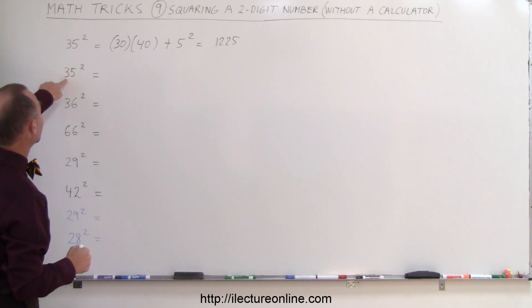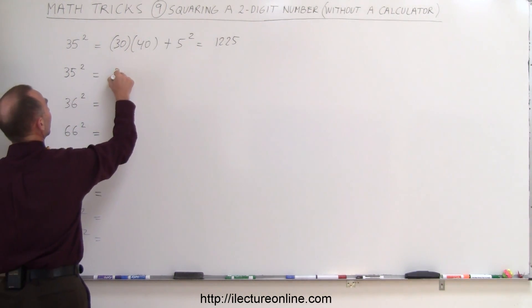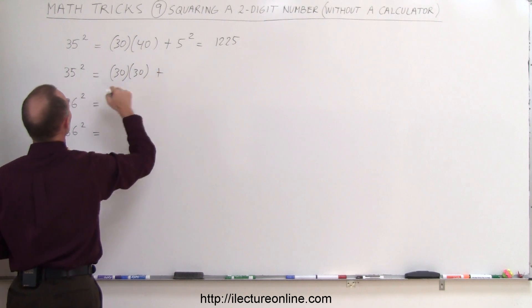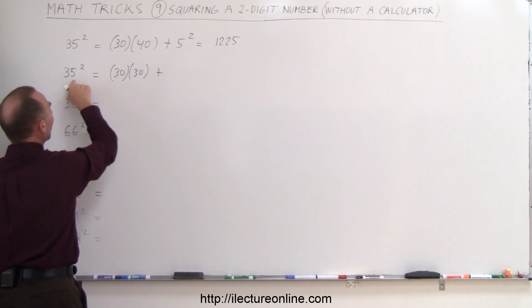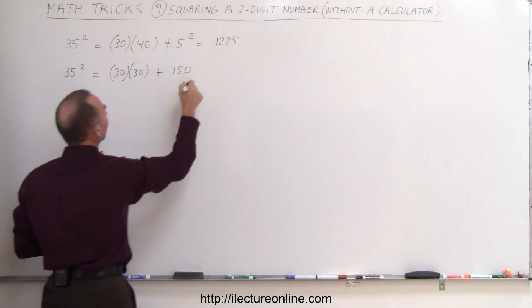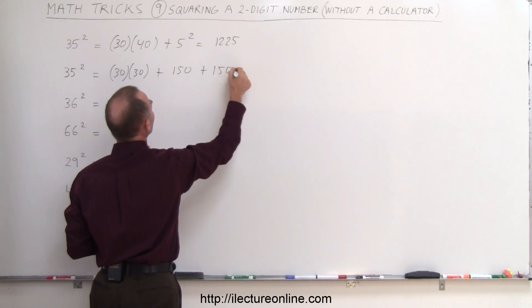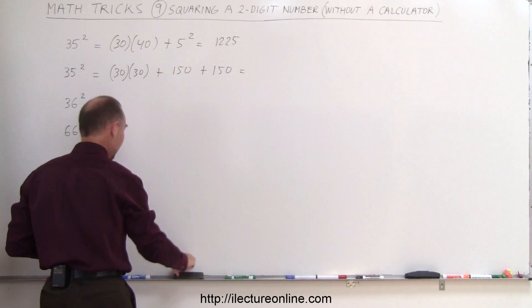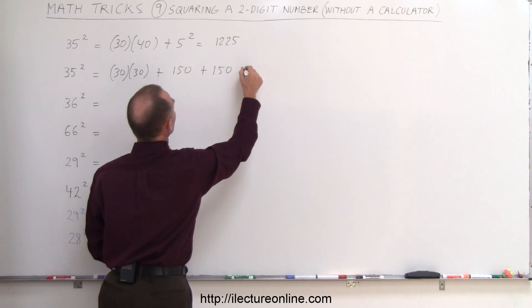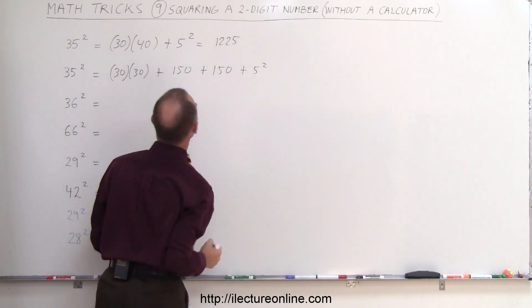Now what you do is you multiply the first digit, which is 30, times itself, so that would be 30 times 30, which is 900, plus, then you multiply 30 times 5, which is 150, and then you do 30 times 5 again, which is again plus 150, and then, oops, not yet, we add one more, plus the last number squared, so that would be plus 5 squared, which is 25.